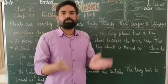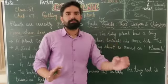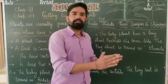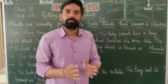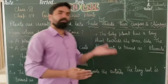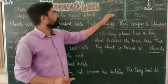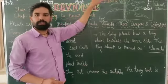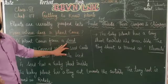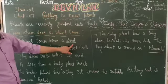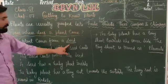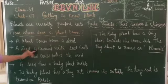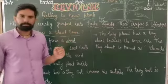जब minerals और water पर्याप्त मात्रा में मिलते हैं, तो plant grow करता है और एक पूरा tree, herb, या shrub बन जाता है। So a plant always starts from a seed। Seed में जब favorable conditions आती हैं तो वो grow कर जाता है।